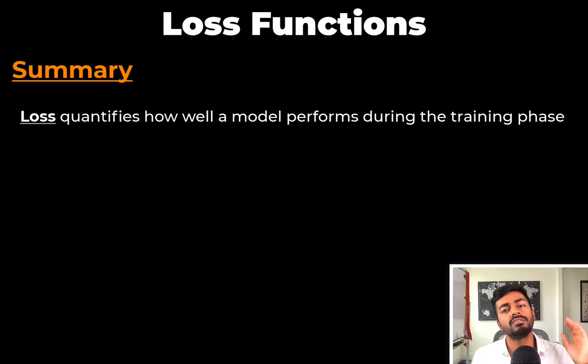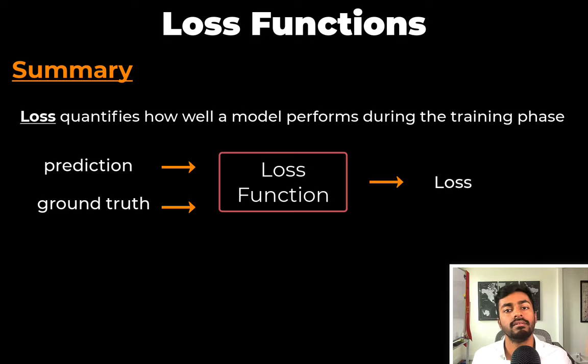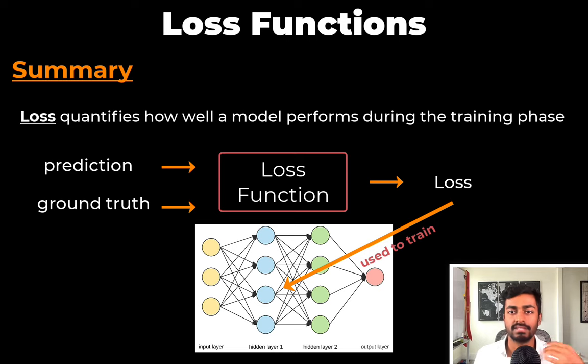A loss function quantifies how well a model performs during the training phase. The loss function is a function that takes the ground truth and model prediction as input and it outputs a loss. This loss ultimately assists in the training of a neural network to solve a specific task. And that's all we have for today.